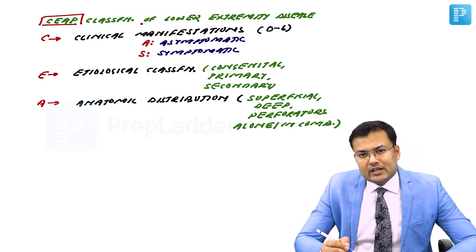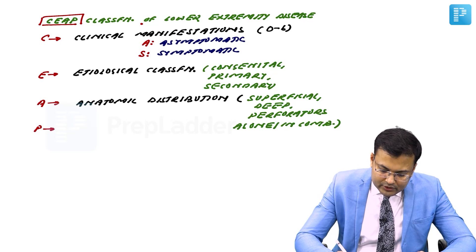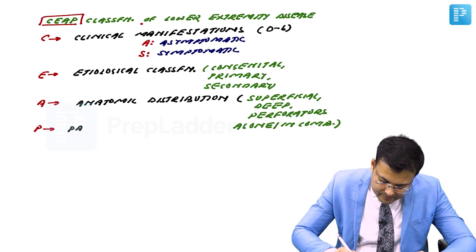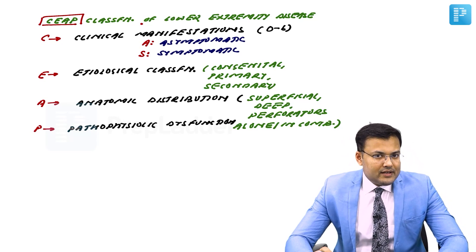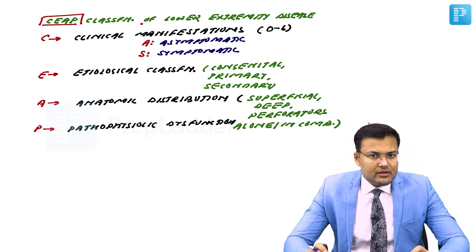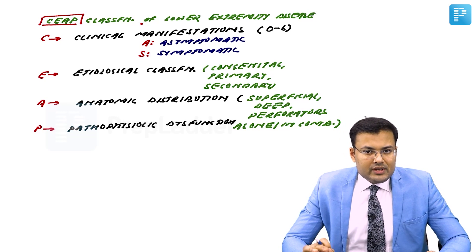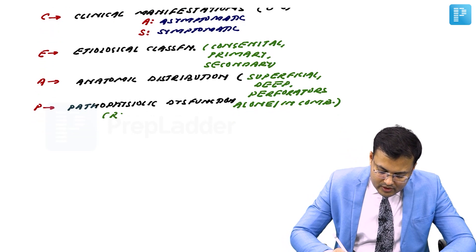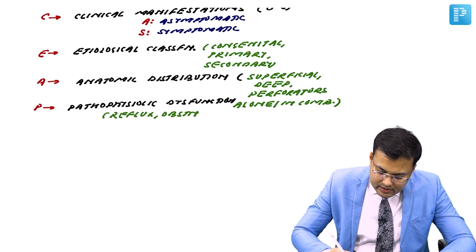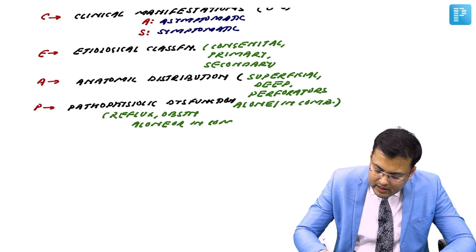P is pathophysiological dysfunction. In this, we include whether there is reflux or obstruction, and whether it is present alone or in combination — meaning both reflux and obstruction can coexist.